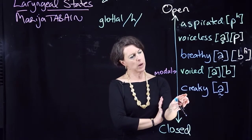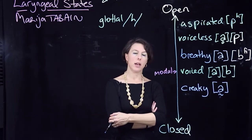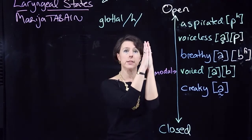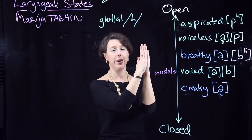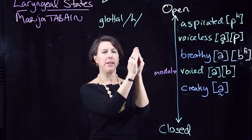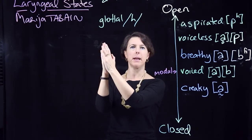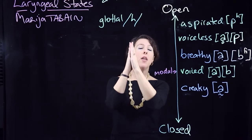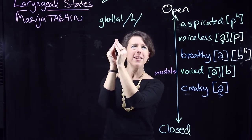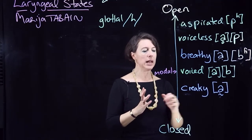Creaky voice sounds like this: [a̰]. It's a very distinctive voice quality. What happens in creaky voice is the vocal folds come apart but snap back together very quickly — apart, back together quickly, apart, back together quickly. It's voiced, but the vocal folds spend a lot more time closed than open. Compare that to breathy voice where they spend a lot more time open — in creaky voice they spend a lot more time closed.